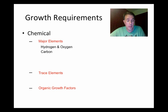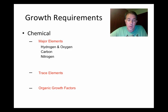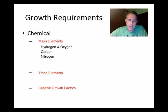Autotrophs can derive their carbon predominantly from carbon dioxide if they're photosynthetic. Nitrogen is required for all proteins, nucleic acids — DNA and RNA — and ATP. Bacteria usually obtain their nitrogen by decomposing proteins, protein-containing material, or other inorganic nitrogen sources such as ammonium, nitrates, or even nitrogen gas.